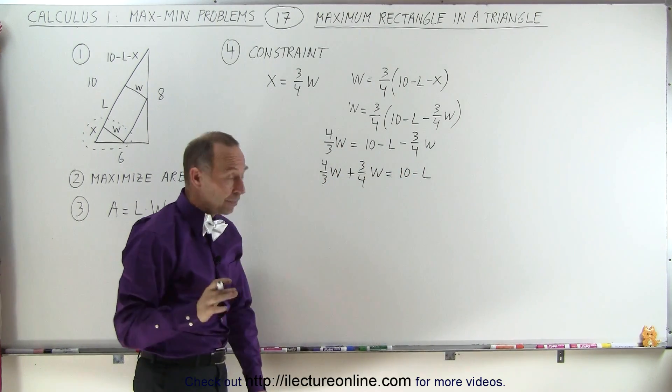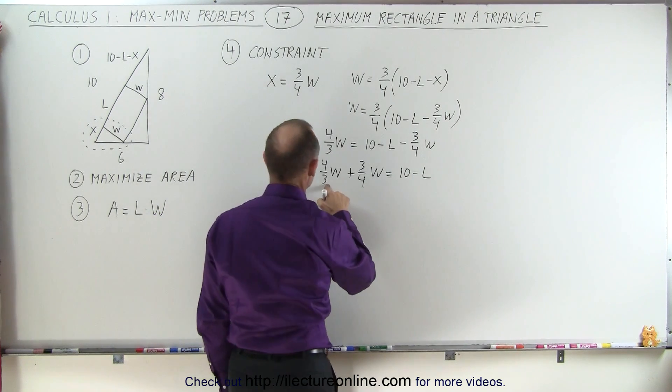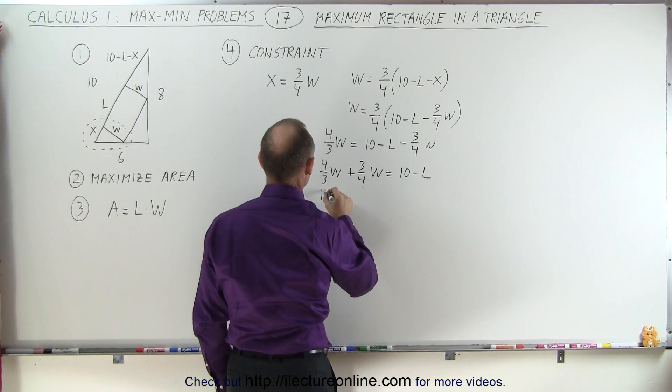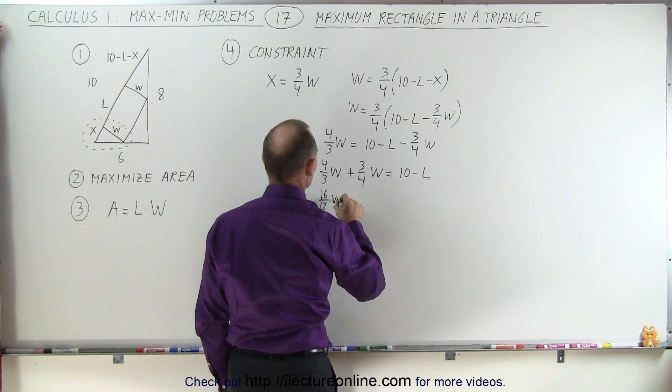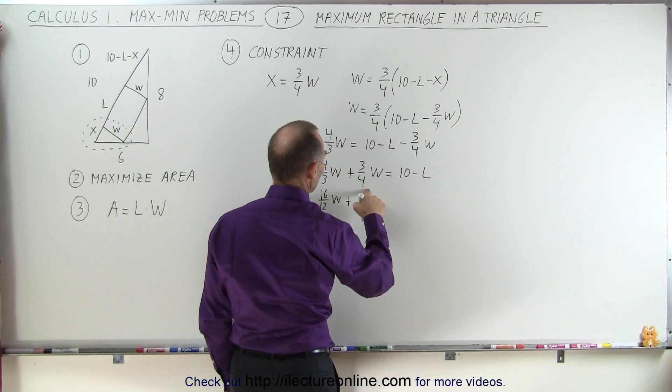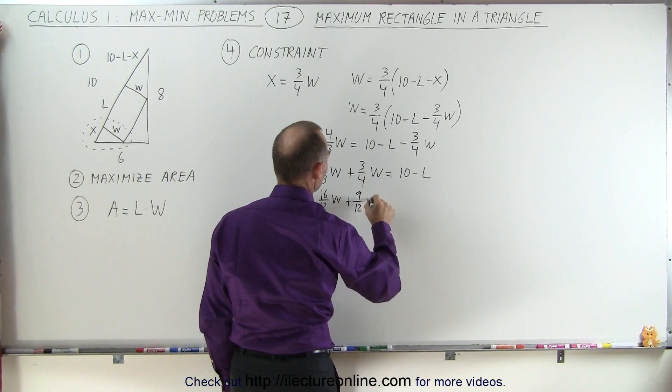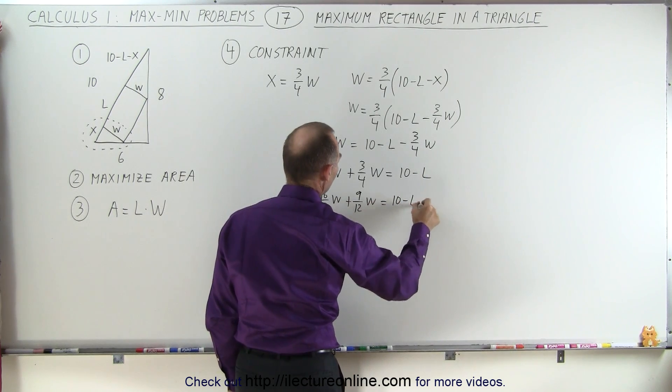Now I need a common denominator, which would be 12. So 3 goes into 12 4 times, that's 16 over 12 W plus that goes into 12 3 times or 9 over 12 W equals 10 minus L.